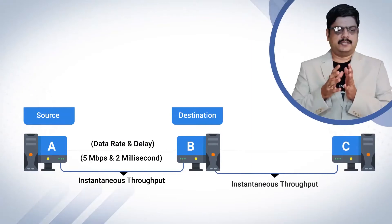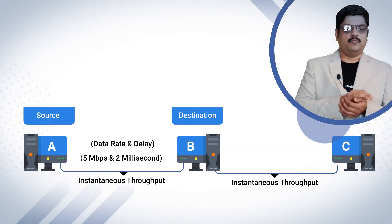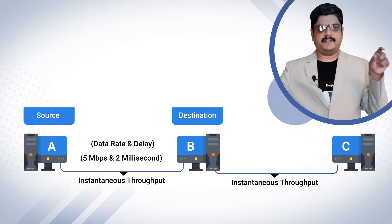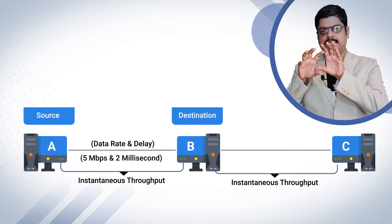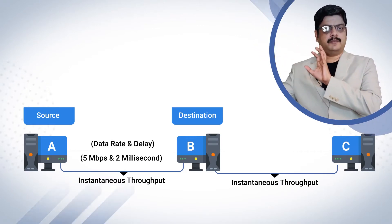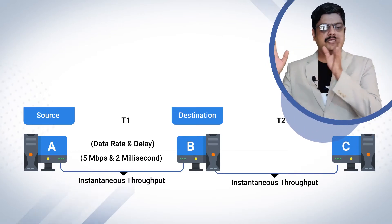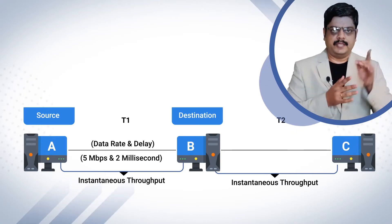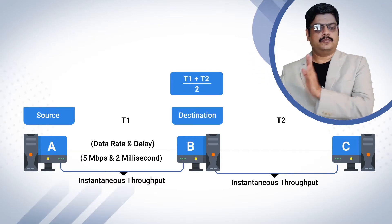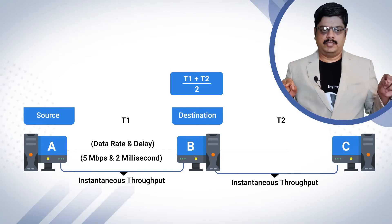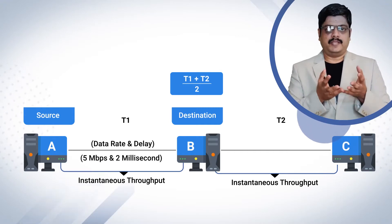Now suppose there is another node called C, so we have A, B, and C. Node C is connected to B and does not have any connection with node A. There will be another instantaneous throughput from B to C. Let's name the throughputs: from A to B is T1, and B to C is T2. To calculate the average throughput between A and C, we calculate instantaneous throughput T1 and instantaneous throughput T2, then divide them by the total number of throughputs, which is 2. That's how we get the average throughput of the entire network.